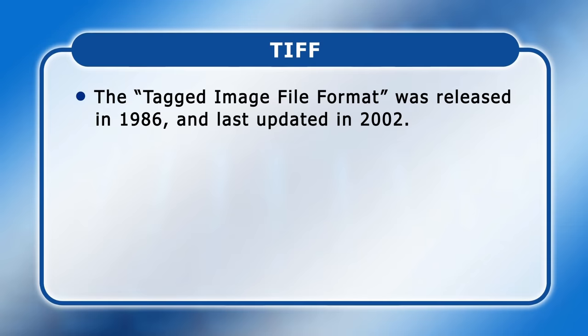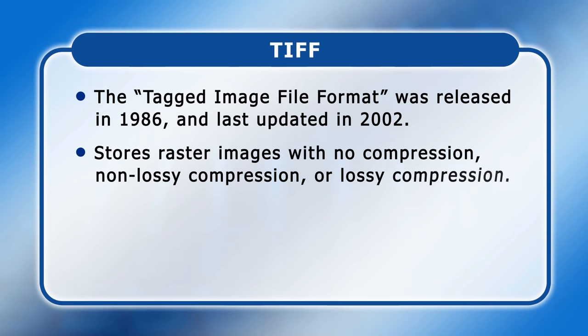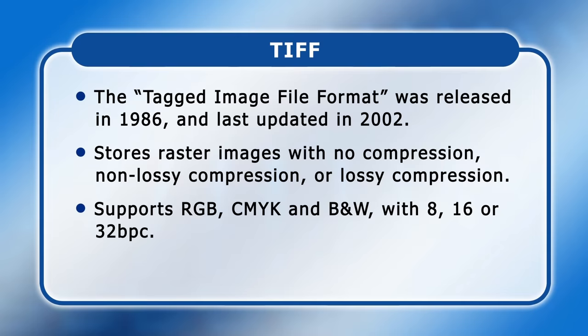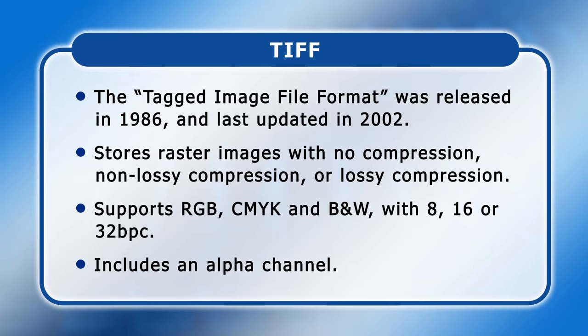TIFF, or the Tagged Image File Format, was first released in 1986, with its specification last updated in 2002. TIFF files store raster images with no compression, non-lossy compression or lossy compression, depending on the options chosen when a file is saved. TIFF also supports RGB and CMYK as well as black and white images, and offers either 8, 16 or 32 bits per channel. An alpha channel is also included. As all of this suggests, TIFF is ideal for professional graphics, especially in print applications, and enjoys wide software support. Some high-end digital cameras also directly shoot TIFF files.